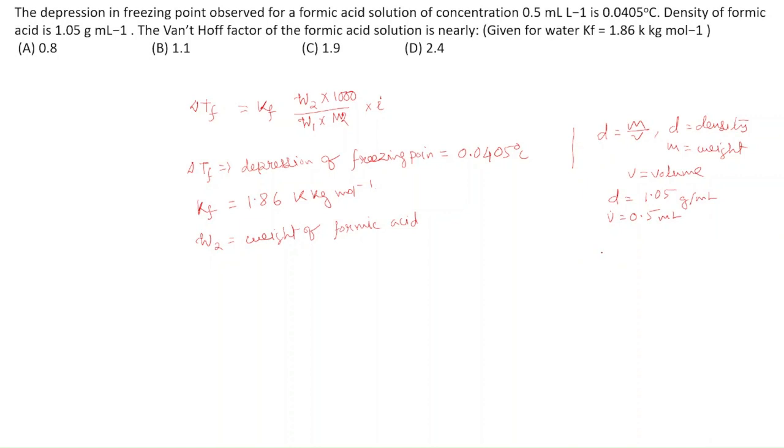We can find the weight. Weight = D × V = 1.05 × 0.5 = 0.525 grams. So, weight of formic acid W2 is 0.525 grams.